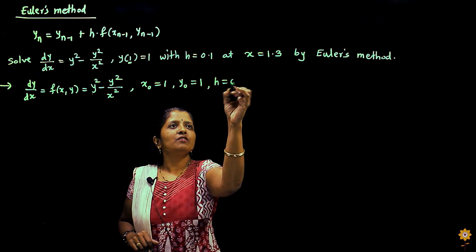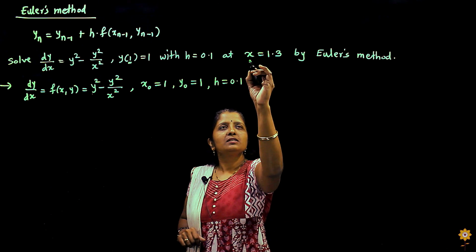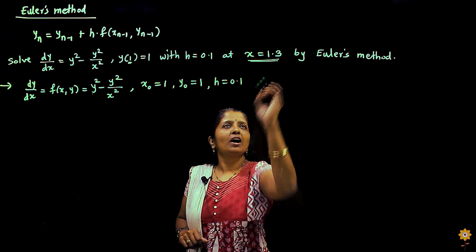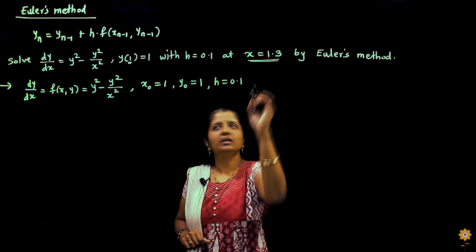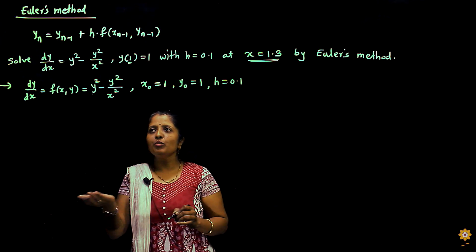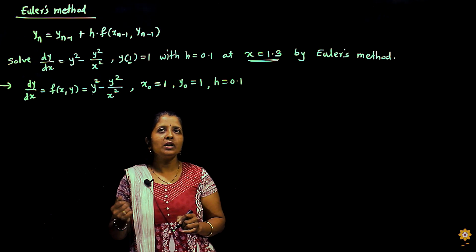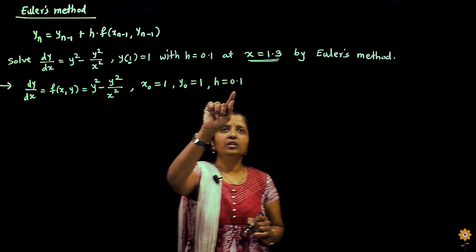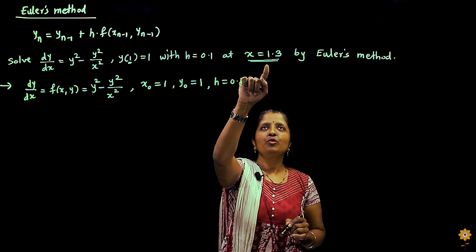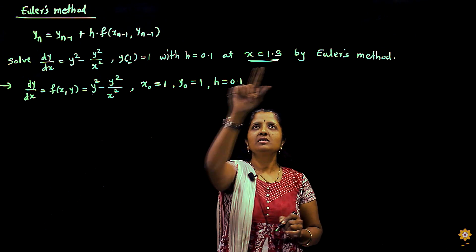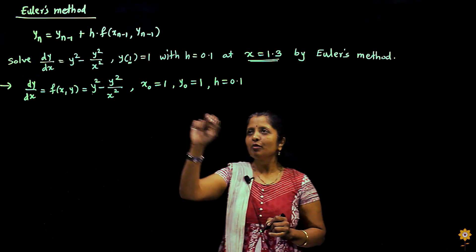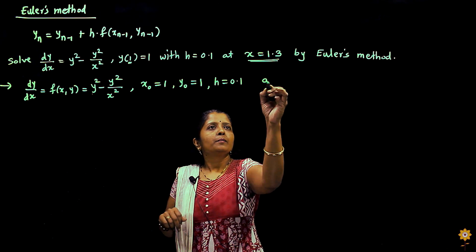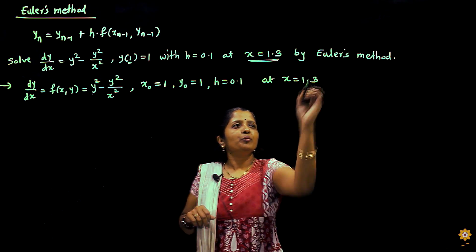Step size is given as 0.1. If you will see in this example, it is asked to calculate y at x equal to 1.3. Let us find out the number of steps required. We have to start with the value of x at 1 with step size 0.1 and reach up to 1.3. So how many steps are we going to require? Three steps, at x equal to 1.3.